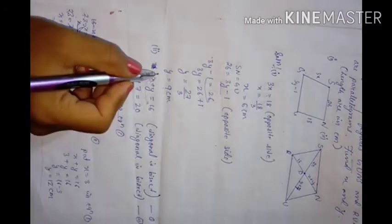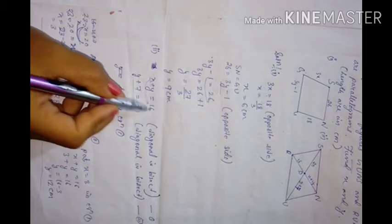Putting x equals 3 into equation 1: 3 plus y equals 16, so y equals 13. Wait — y equals 16 minus 3 equals 13. So x equals 3 centimeters and y equals 13 centimeters.